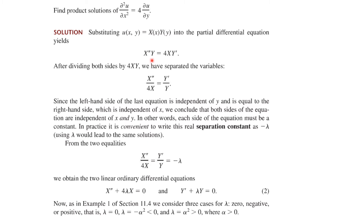Substituting the product form gives X''Y = 4XY'. Separating variables yields X''/4X = Y'/Y. The left side is a function of x only and the right side is a function of y only, so both sides must equal a constant, which we call minus lambda. This gives two ordinary differential equations: X'' + 4λX = 0 and Y' + λY = 0.